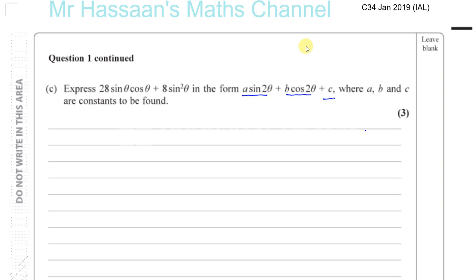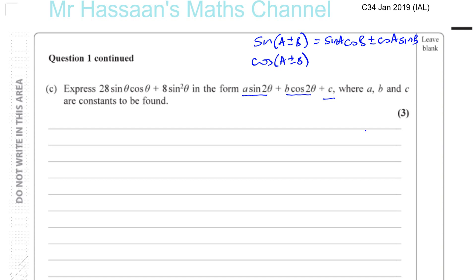In the formula book you will find the addition formula: sin(A ± B) = sin A cos B ± cos A sin B. And for cos(A ± B), you get cos A cos B ∓ sin A sin B. These formulas are given to you in the formula booklet, so if you forget the double angle formulae, you could use these to derive them.